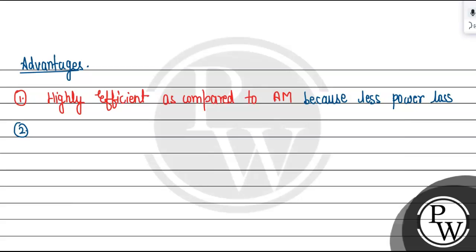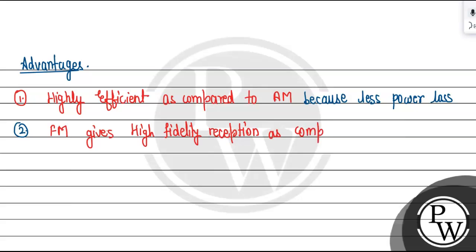The second advantage is that fidelity reception is very high. Frequency modulation FM gives high fidelity reception. This means the sound quality of frequency modulation is very good as compared to AM modulation.